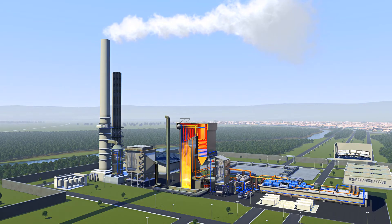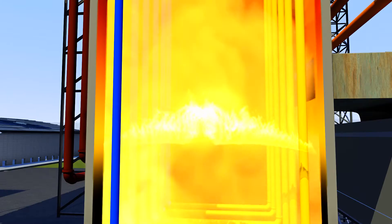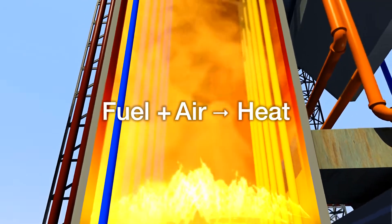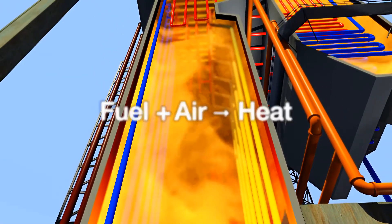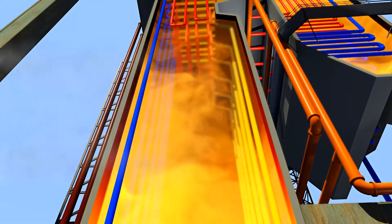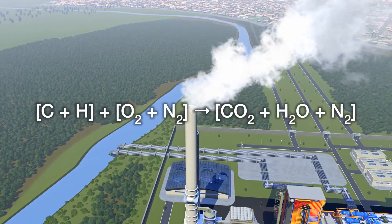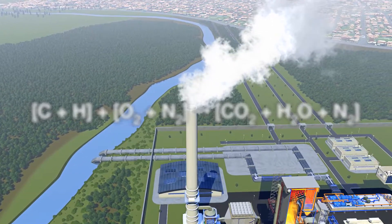In an ideal world, optimum combustion would be achieved when the air supplied is exactly matched to the amount needed to completely combust the fuel. Known as the stoichiometric combustion ratio, this air-to-fuel ratio would not supply sufficient oxygen to permit complete combustion in real life.